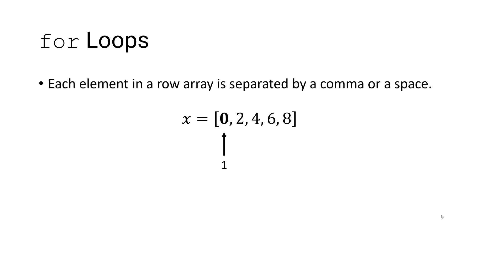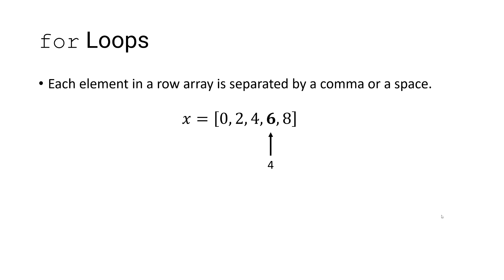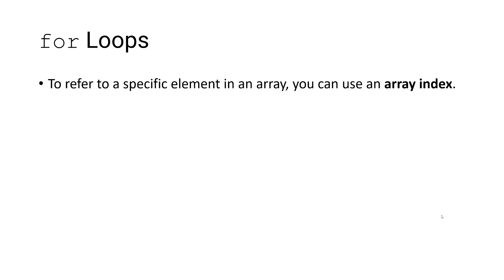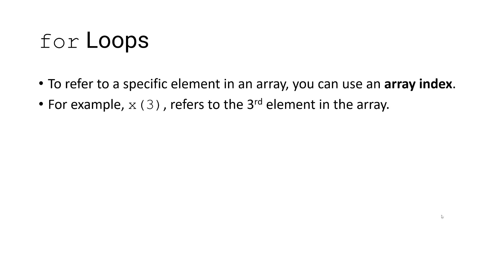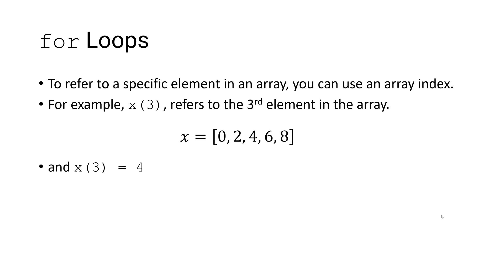This array has five elements: 0 is our first element, 2 our second element, 4 is our third element, 6 is our fourth element, and 8 is our fifth element. To refer to a specific element in an array you can use an array index. For example, x of 3 refers to the third element in the array, and in this case that third element has a value of 4.